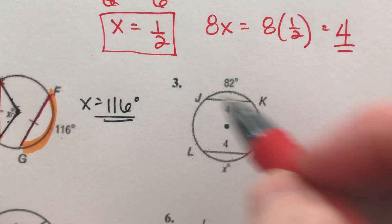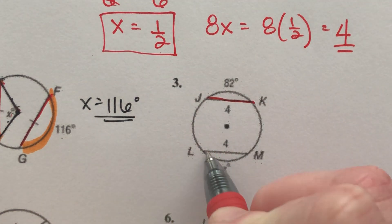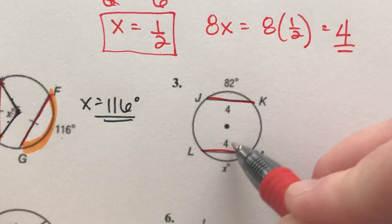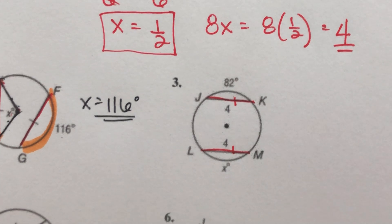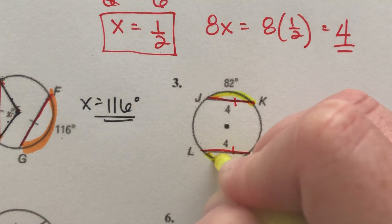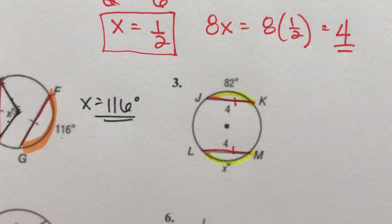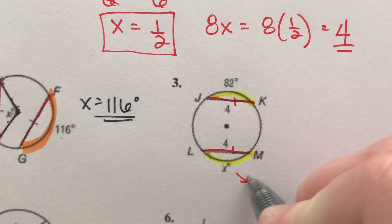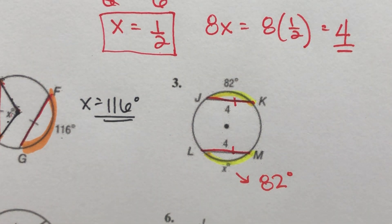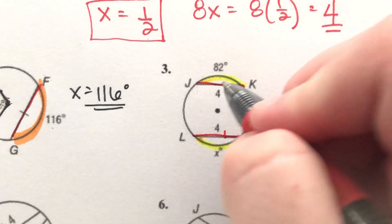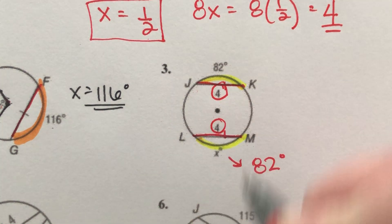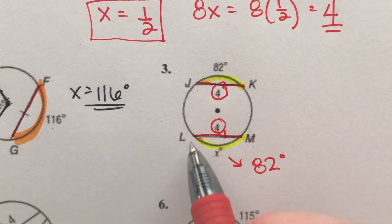Next example: we've got this chord and this chord, both measured at 4. So they're congruent, which tells me the arc on top is congruent to the arc on the bottom. If the top arc is 82 degrees, then the arc on the bottom has to be 82 degrees. There's no math to show — it just is. Both chord lengths are 4, so both arcs are 82.